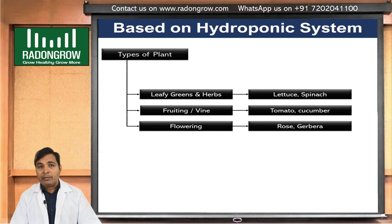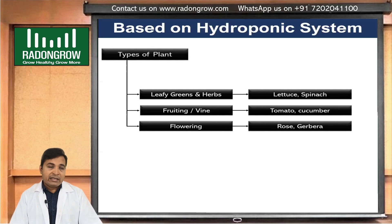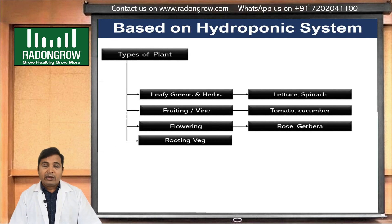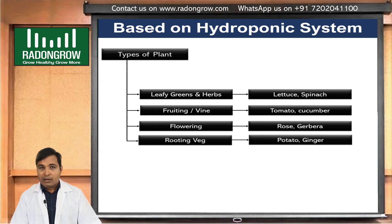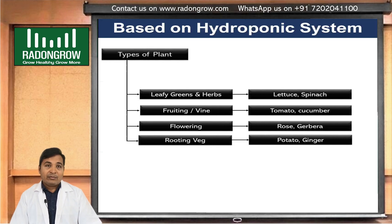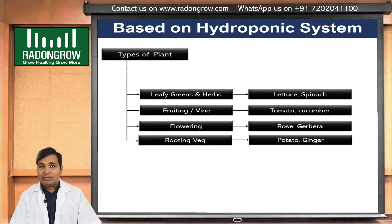Another category is rooting vegetables. Rooting vegetables grow under the ground, so a pure hydroponic system is not suitable for them. We will have to use a media-based system, which we will also discuss further in upcoming episodes.